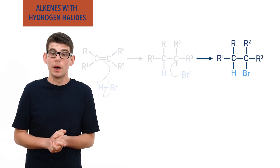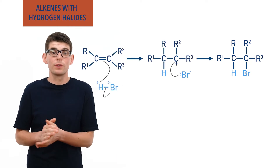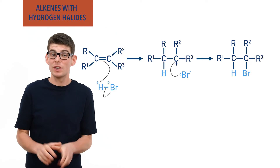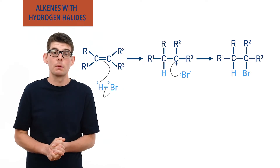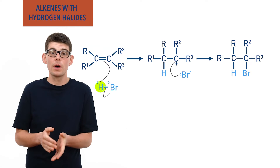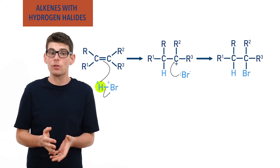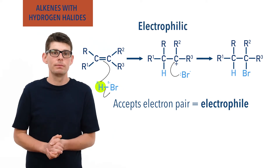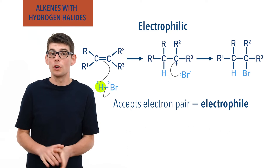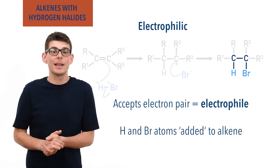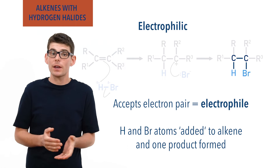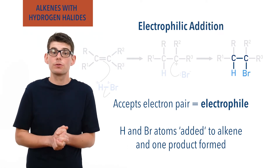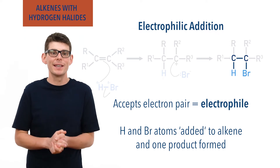The hydrogen and halogen from the hydrogen halide end up bonded to the two different carbon atoms from the double bond in the alkene. The species that initially attacked the carbon-carbon double bond was the partially positive hydrogen from the hydrogen halide, and it acted as an electrophile, accepting a pair of electrons, making the reaction electrophilic. Both atoms from the hydrogen halide molecule got added to the alkene and only one product was formed, making the reaction an addition reaction. As a result of both of these things, we describe the reaction mechanism as electrophilic addition.